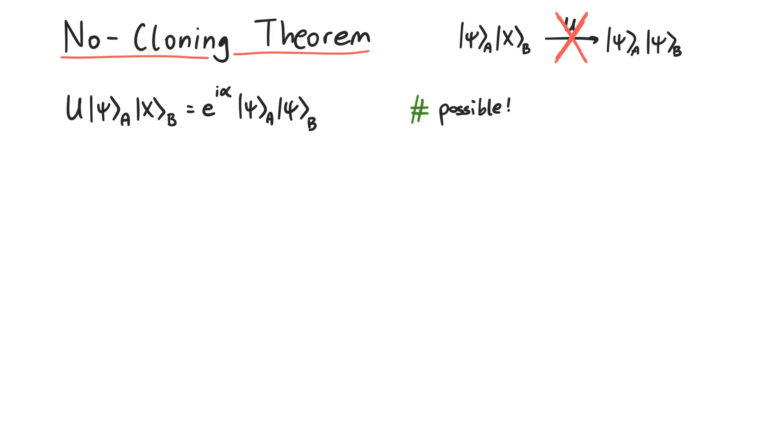However, we want that our transformation U can clone any state. So if we take another state phi, we also want to be able to clone this state into system B, this time with a possibly different phase factor.